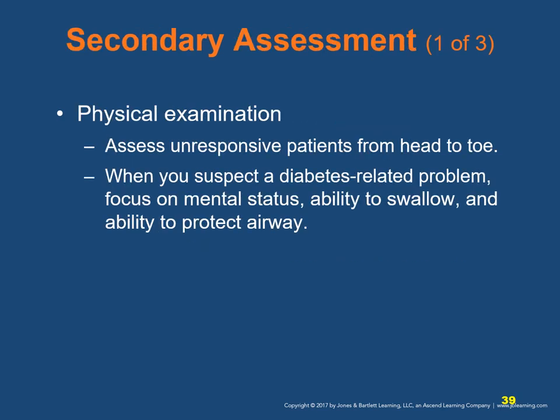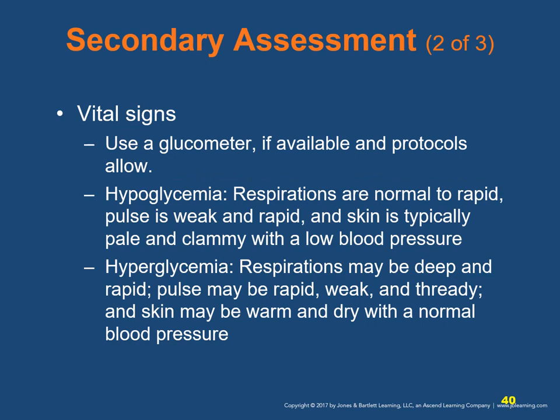In your secondary assessment, perform a physical exam and assess unresponsive patients from head to toe. Look for clues about the patient's condition and be alert for secondary injury due to altered consciousness. When you suspect a diabetes-related problem, focus on mental status, ability to swallow, and ability to protect the airway. Obtain a Glasgow Coma Scale (GCS) score. Check vital signs including blood glucose level, using a glucometer if available and protocols allow.